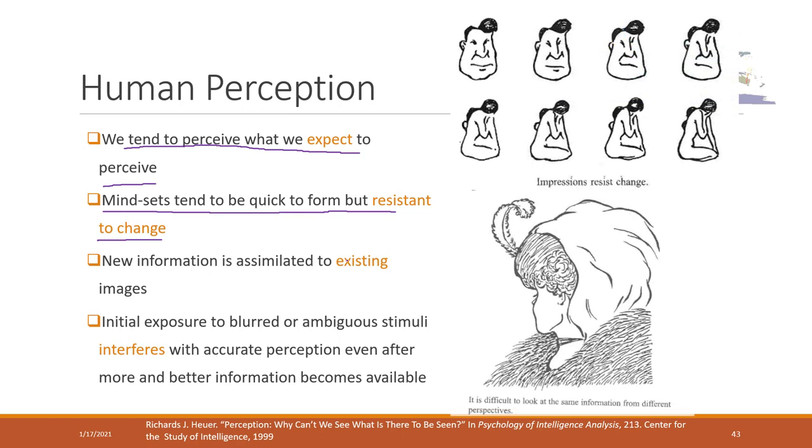This reading also has some interesting examples. This image looks like a male's face, and this image looks like a young lady. If you look at this image, some people may see a young lady and some people may see an old lady. It's also very hard for you to look at the same information from different perspectives. If you think there's a young lady, it might be hard for you to think that it is an old lady.